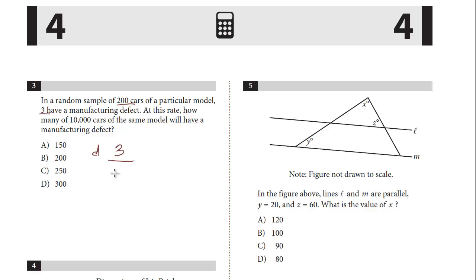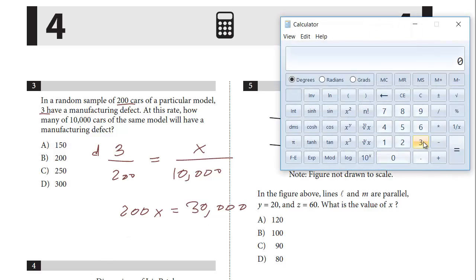This is over the sample out of 200, so this rate is equivalent. Cars are going to be on the bottom, and we have to find at this rate, and that's going to be the X. And then we just cross multiply, so we get 200X equals 30,000. You can use your calculator for that. So 30,000 divided by 200, and the answer is 150.